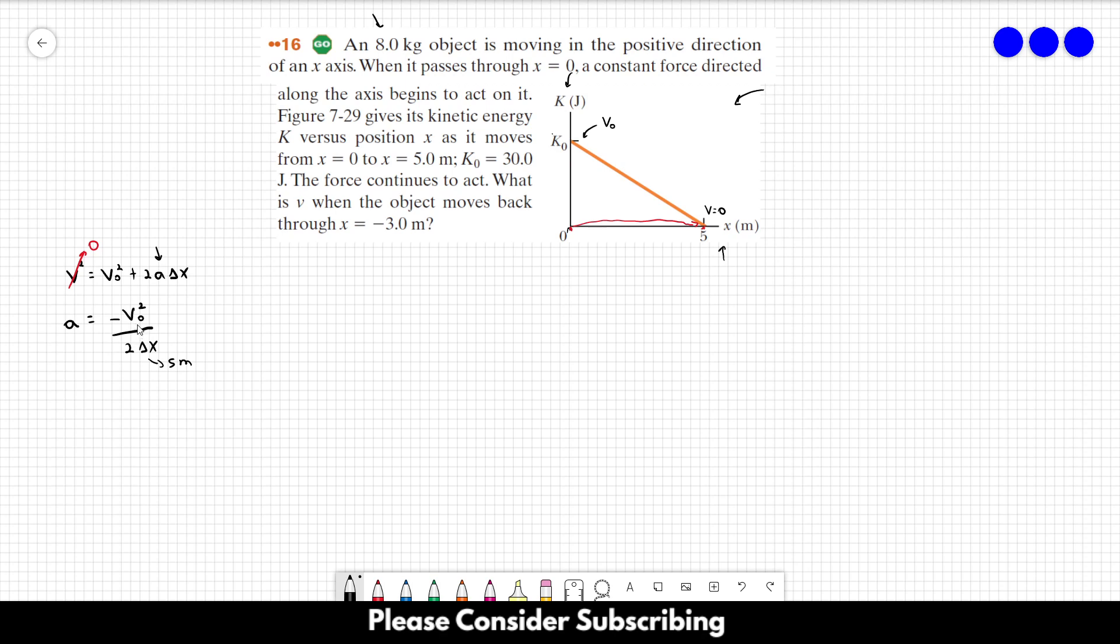And the initial velocity we don't have, but we have the initial kinetic energy. Remember that the kinetic energy is mass times the speed squared over 2. So V₀ squared is 2 times K₀ over m.